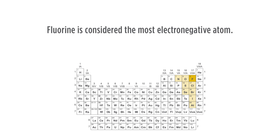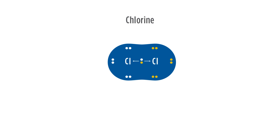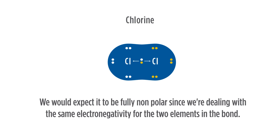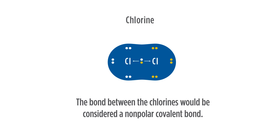Let's look at a few examples. Consider the diatomic molecule chlorine. In this case, we're dealing with a bond between two atoms of the same element. We would expect it to be fully non-polar since we are dealing with the same electronegativity for both atoms in the bond. Therefore, the bond between the chlorines would be considered a non-polar covalent bond.